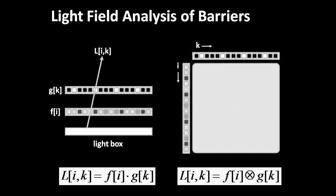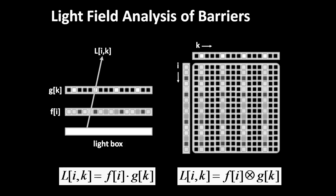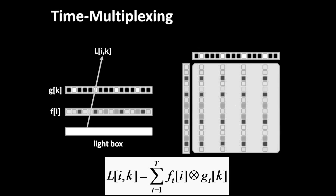Here, we show that the emitted light field is given by the outer product of the front and rear masks. Note that for pinhole arrays, the majority of columns are dark, leading to dim, low-resolution images. Also note that the resulting light field must be rank 1.